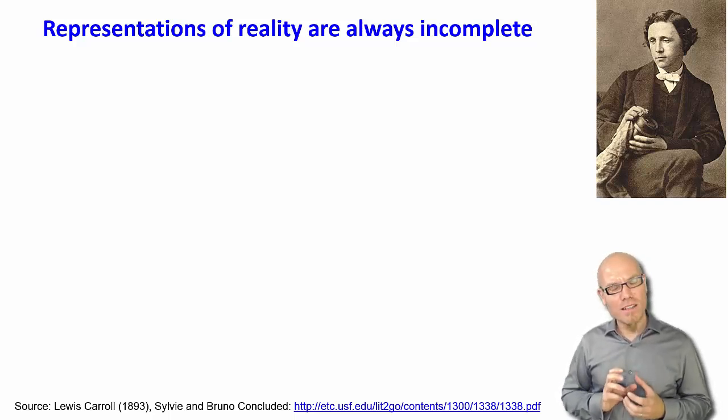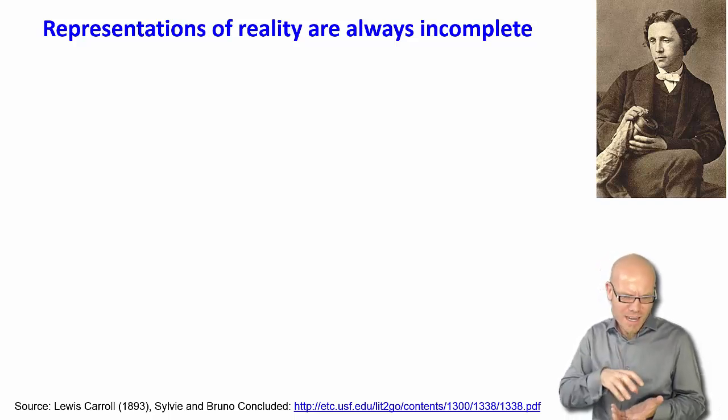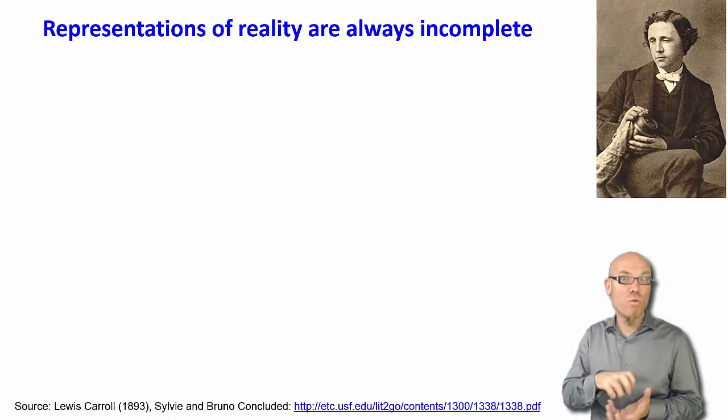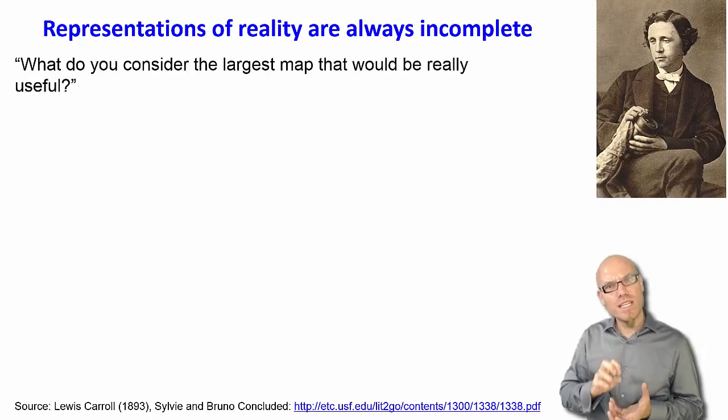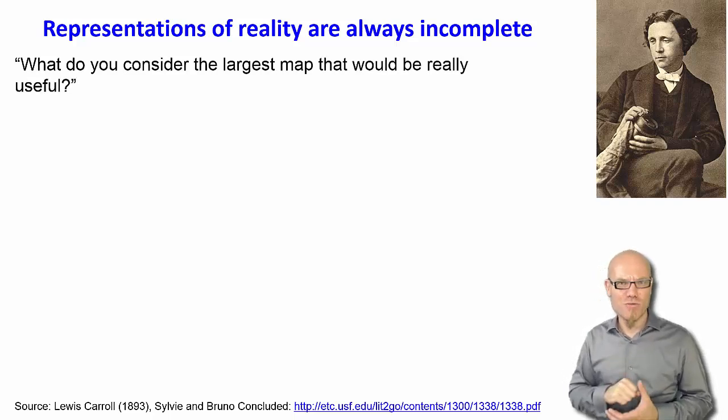The idea is that scientific models are always models, so they are abstractions from reality. They are like maps, they describe the reality, but they are not one to one. And the basic question is, what is the largest map that would be really useful to describe reality?